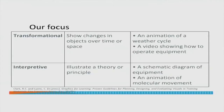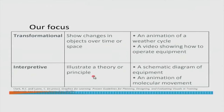What we are going to look at in today's session are two types of visualizations. One is called a transformational visualization, which basically shows changes in an object over time or space — for example, an animation of a weather cycle or a video showing how to operate equipment. The other type is called an interpretive visualization, which illustrates a theory or principle — for example, a diagram of equipment, a schematic, or an animation of molecular movement.